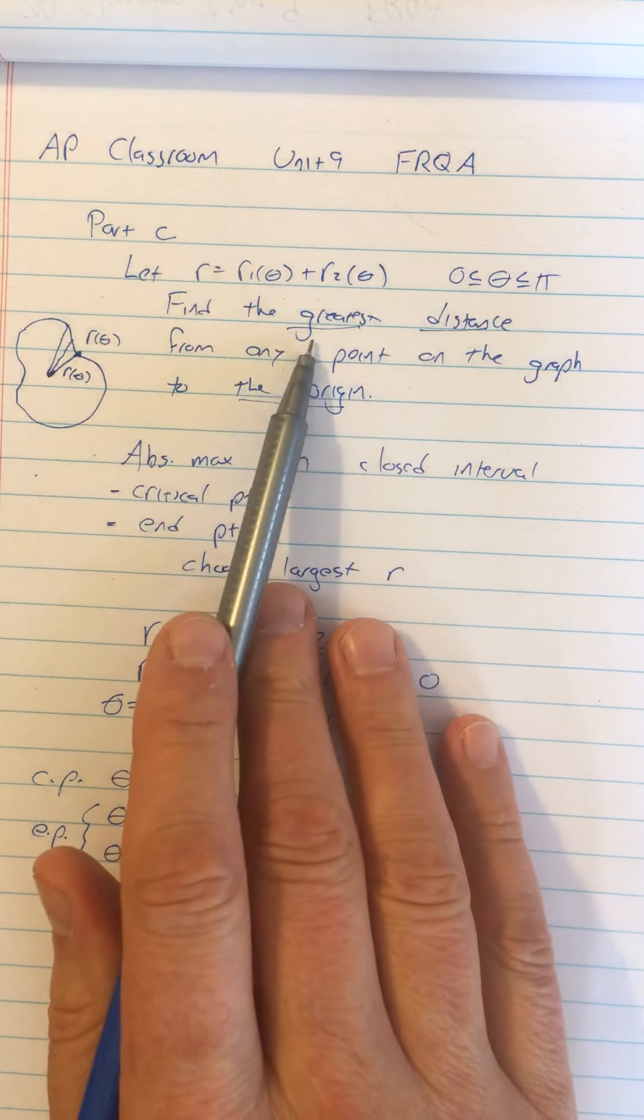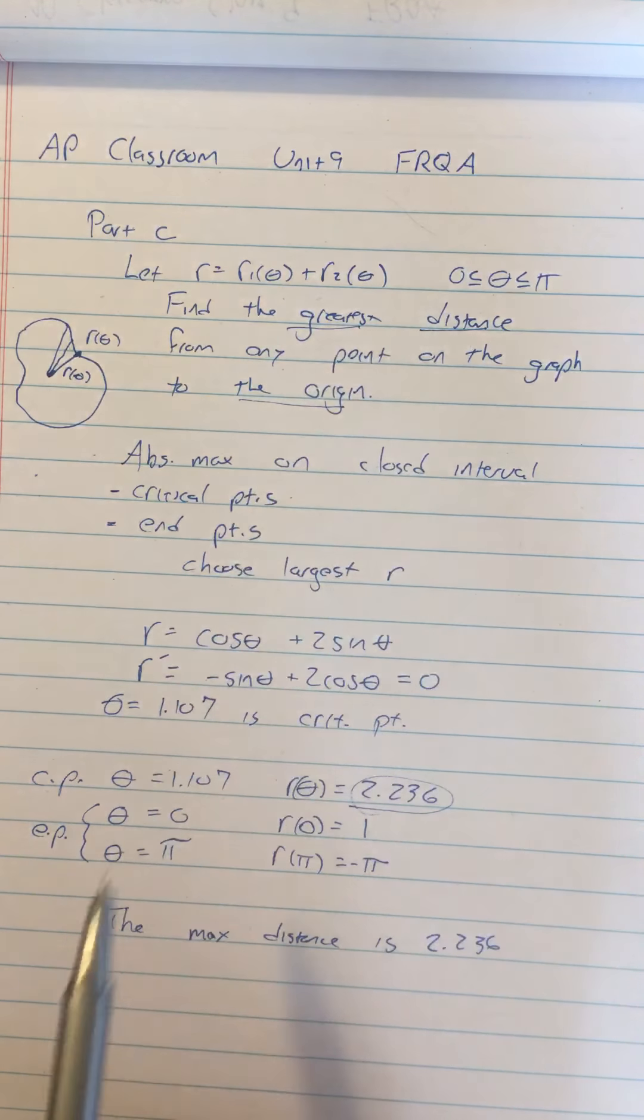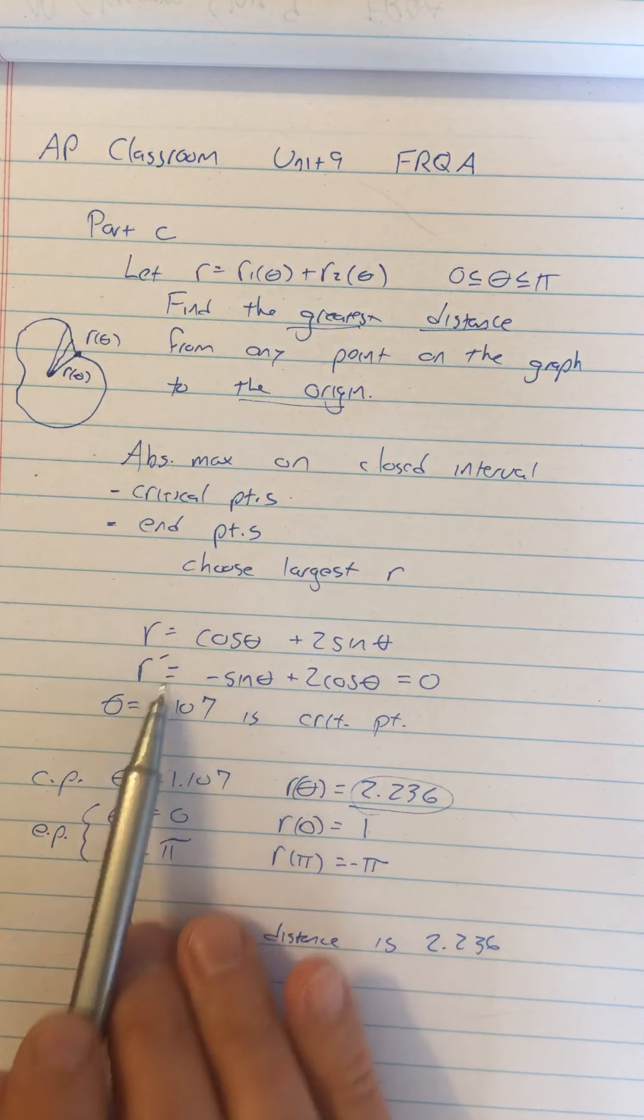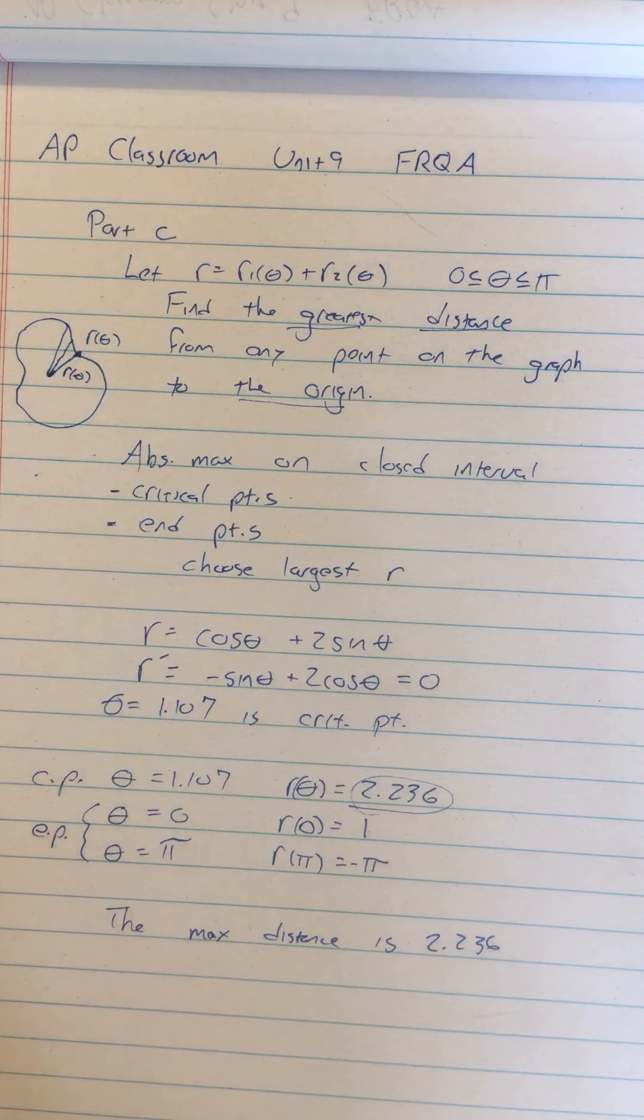So the moral of the story is you're looking for a maximum, greatest distance. How do I find a maximum? You do a derivative. So if your solution didn't have a derivative in it, you were not even doing the right thing. So you need to think about how do I maximize something? I do a derivative.